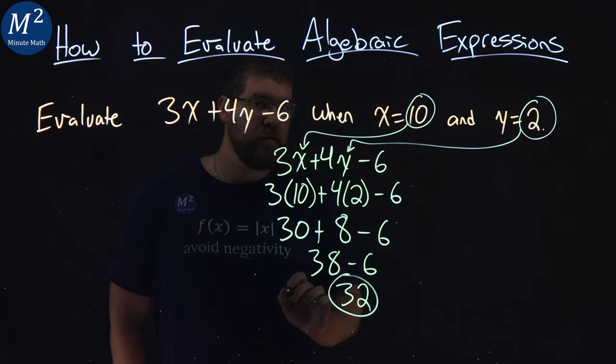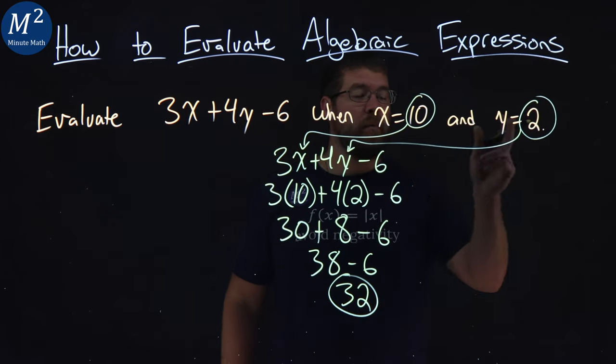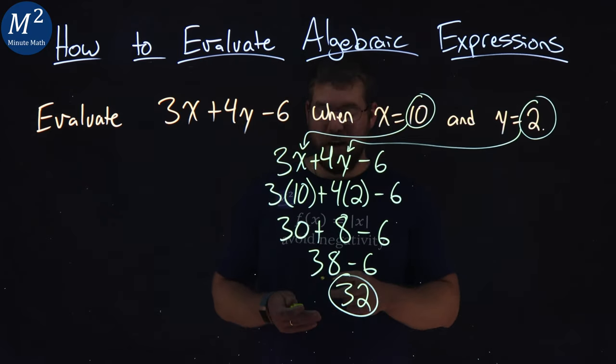And there we have it. We evaluated 3x plus 4y minus 6 when x equals 10 and y equals 2. And we got a 32.